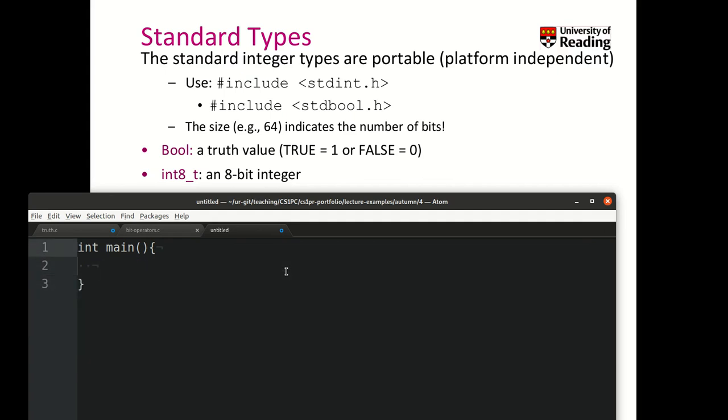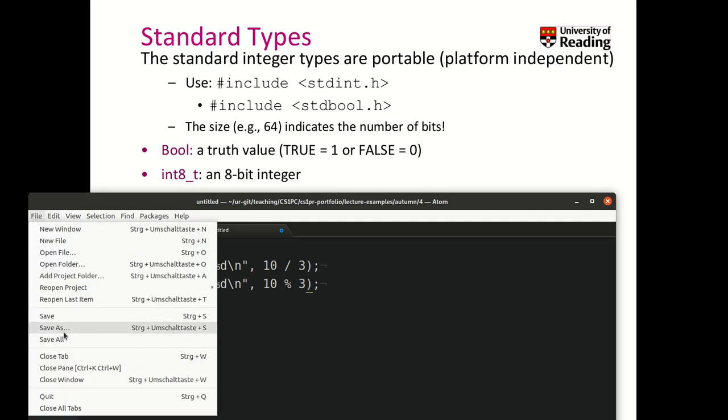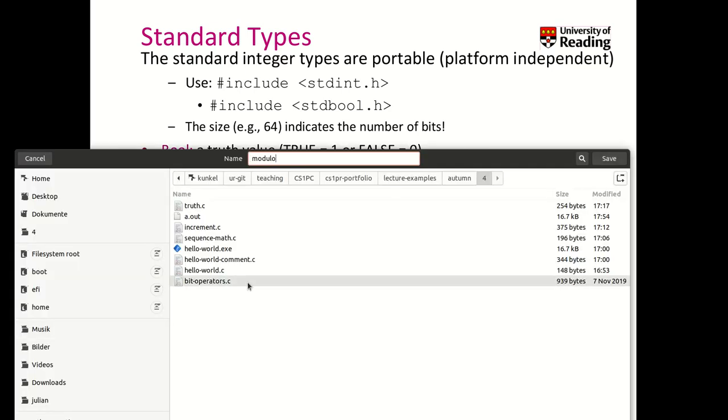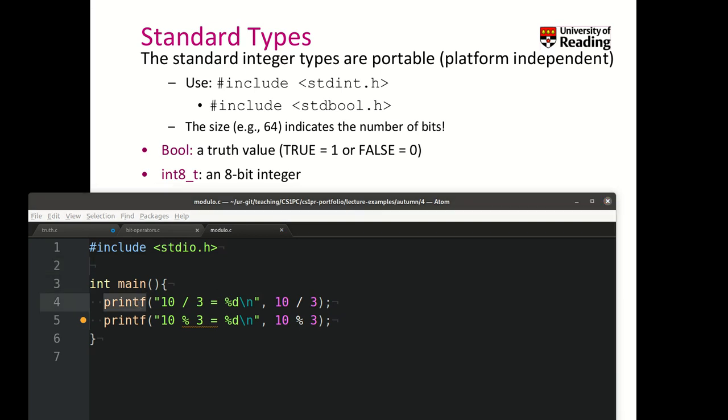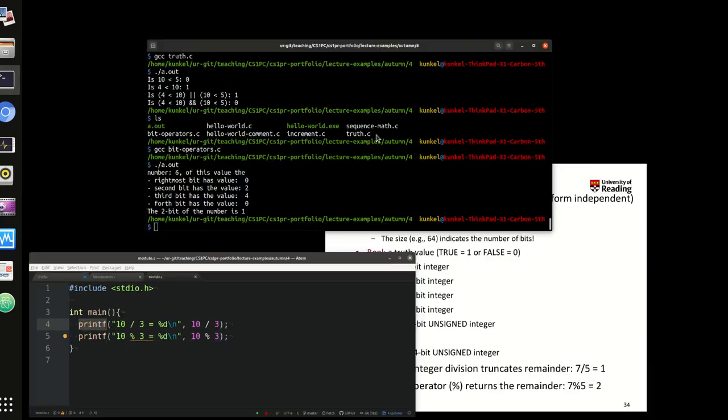Let me create a very simple program in which we just print out 10 divided by 3 and we print the remainder as well. So we just have to repeat this. And here we go. Let me save it as modulo.c. And now I should include stdio.h to make printf known. Let me do that.